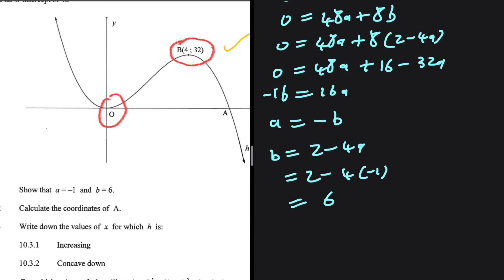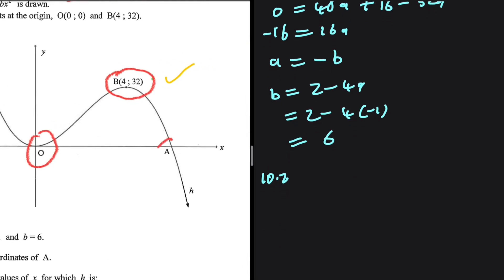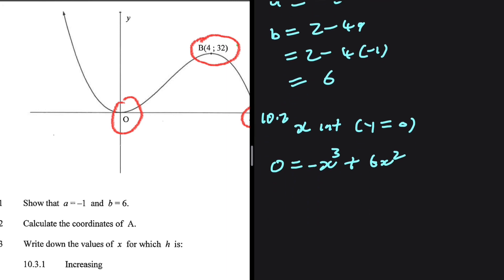Let's look at 10.2 — we need to calculate the coordinates of point A, which is one of the x-intercepts of h of x. For x-intercepts, we let y equal 0. So 0 equals minus x³ plus 6x². Dividing both sides by minus 1 gives x³ minus 6x² equals 0. Taking x² as a common factor gives x²(x minus 6) equals 0.